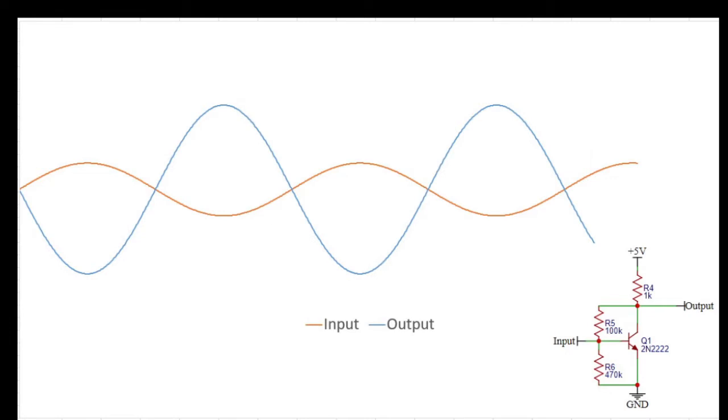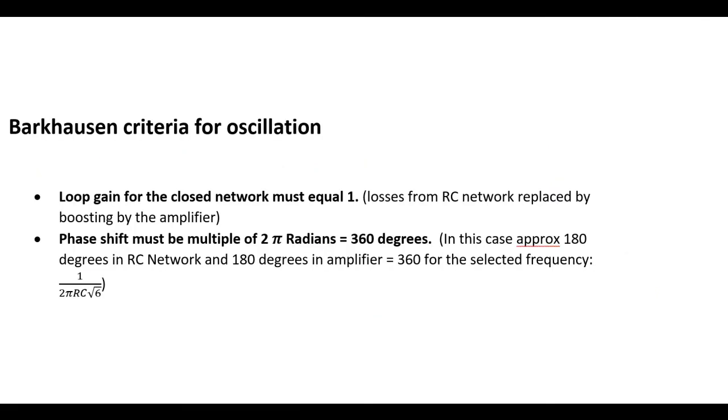The magic of this when it's combined with the RC network from before is that the amplifier is introducing a 180 degree phase shift and then boosting the signal. And the RC network is letting through just one frequency with a 180 degree phase shift that's attenuated, but then it's boosted back up by the amplifier. All the other frequencies, the phase shift is not quite a full 360 degrees. So effectively you kind of get a cancelling out effect of the whole network.